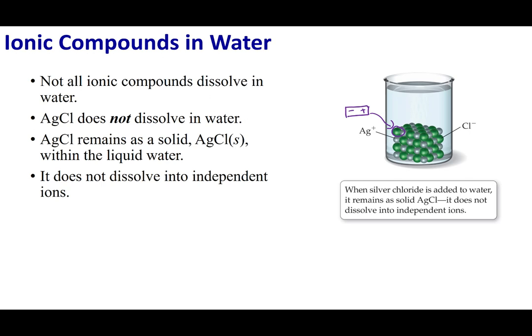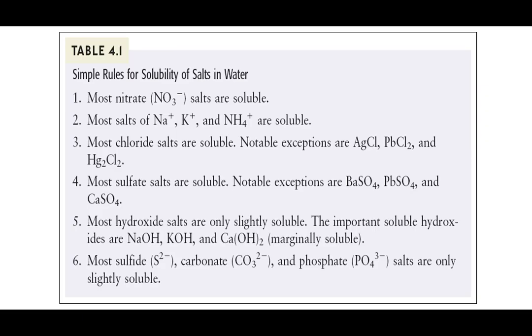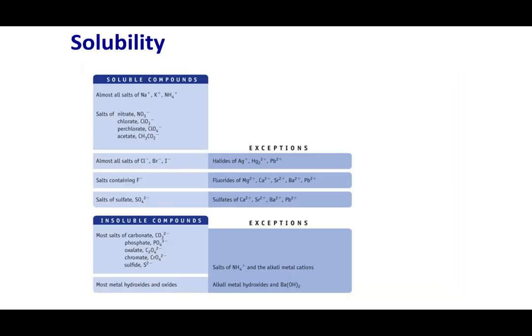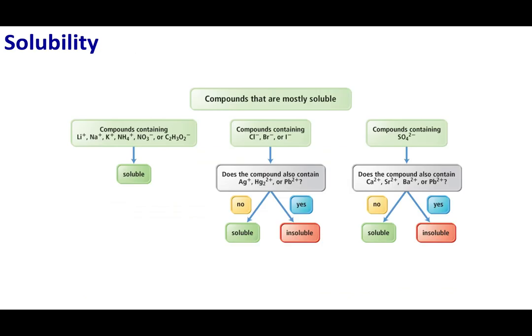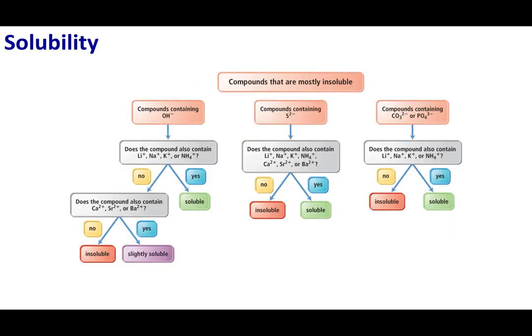Now the question becomes which ionic compounds are soluble and which are insoluble. If you look in your book, you can look at table 4.1. They give you the solubility rules. The format your book uses gives the solubility rules in terms of sentences. Other books have charts of the solubility rules, and still others use flow charts to help you determine if a compound is soluble or not.